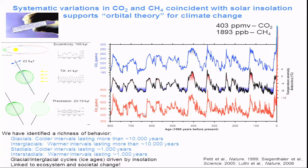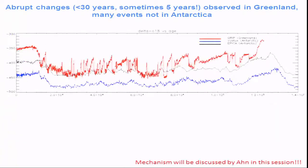Some of these abrupt events are termed stadials or interstadials depending on roughly how long they last, and there are even more abrupt events that have been linked to both ecosystem and societal changes that are quite dramatic in their nature. I want to highlight that both the abrupt warmings and abrupt coolings occur on very, very rapid timescales — in some cases less than 30 years, sometimes even as short as five years. What's shown here in the oxygen isotope record of ice cores — with the timescale reversed, going back through time from present day — is the Greenland records indicating abrupt shifts in the air temperature above where the Greenland ice core was taken.